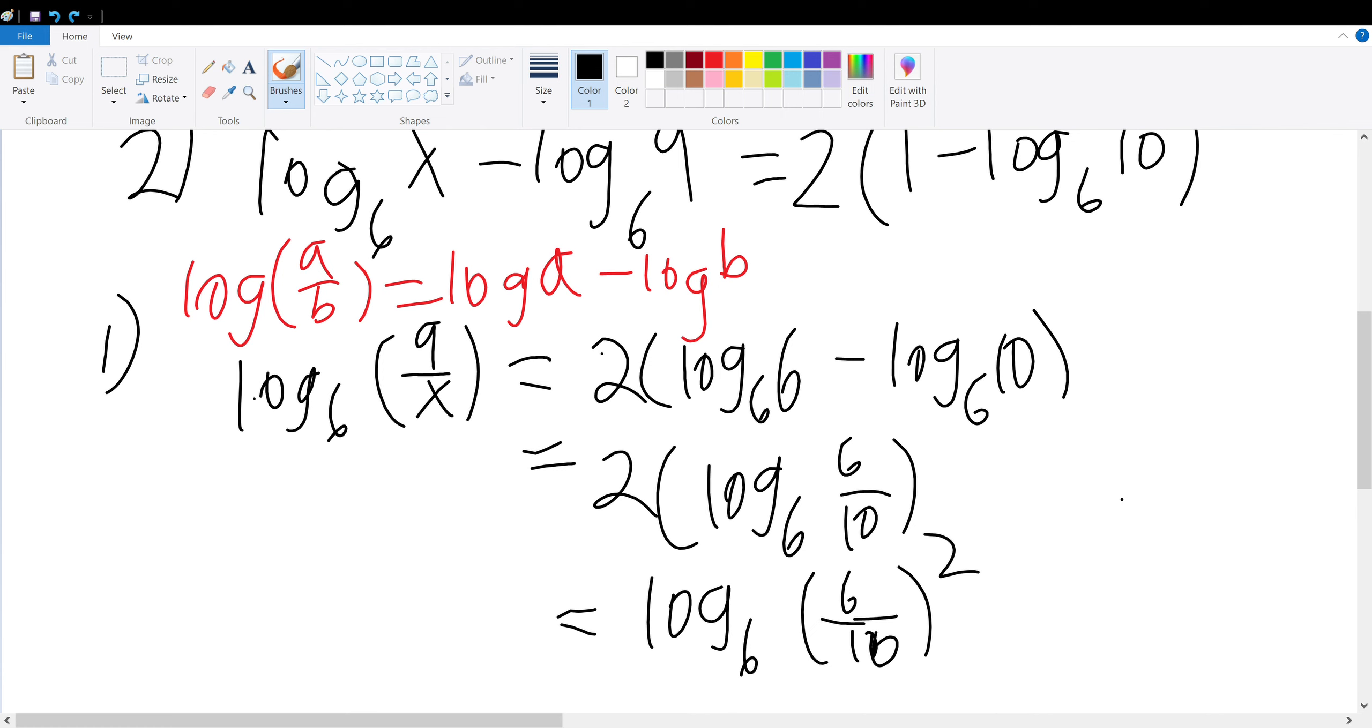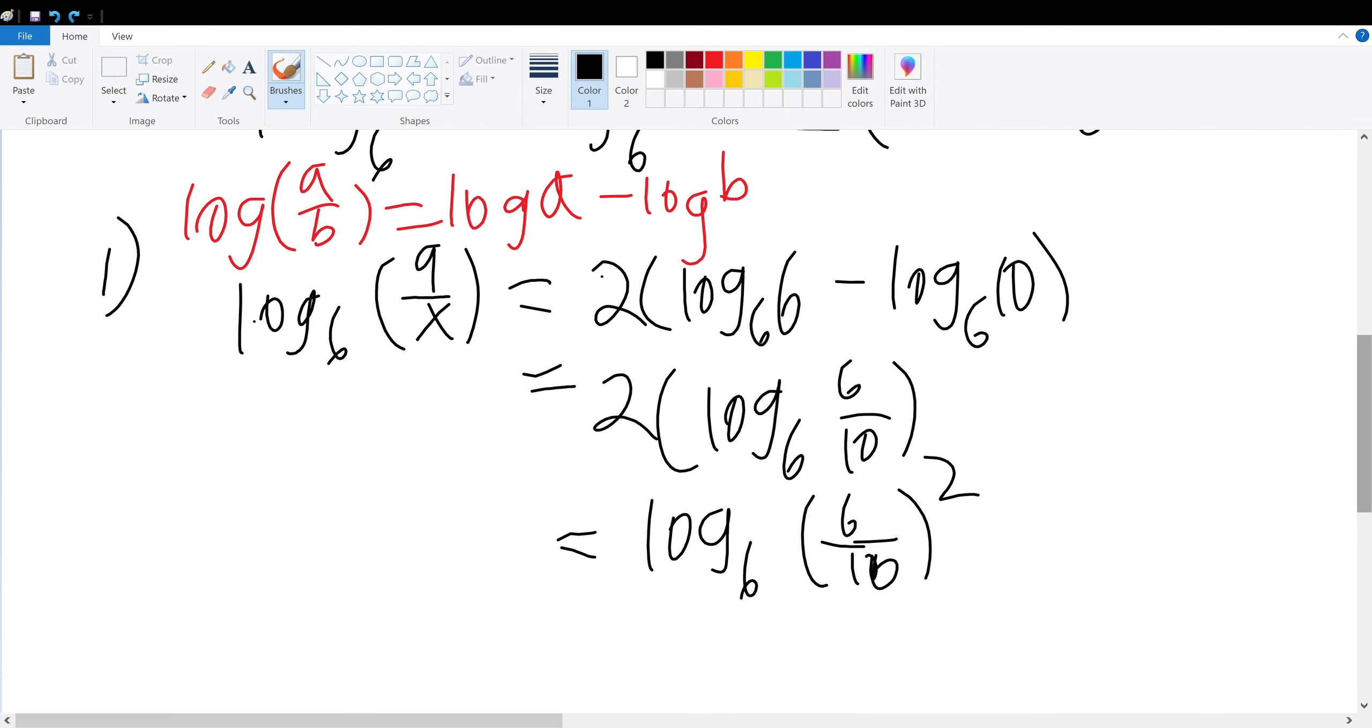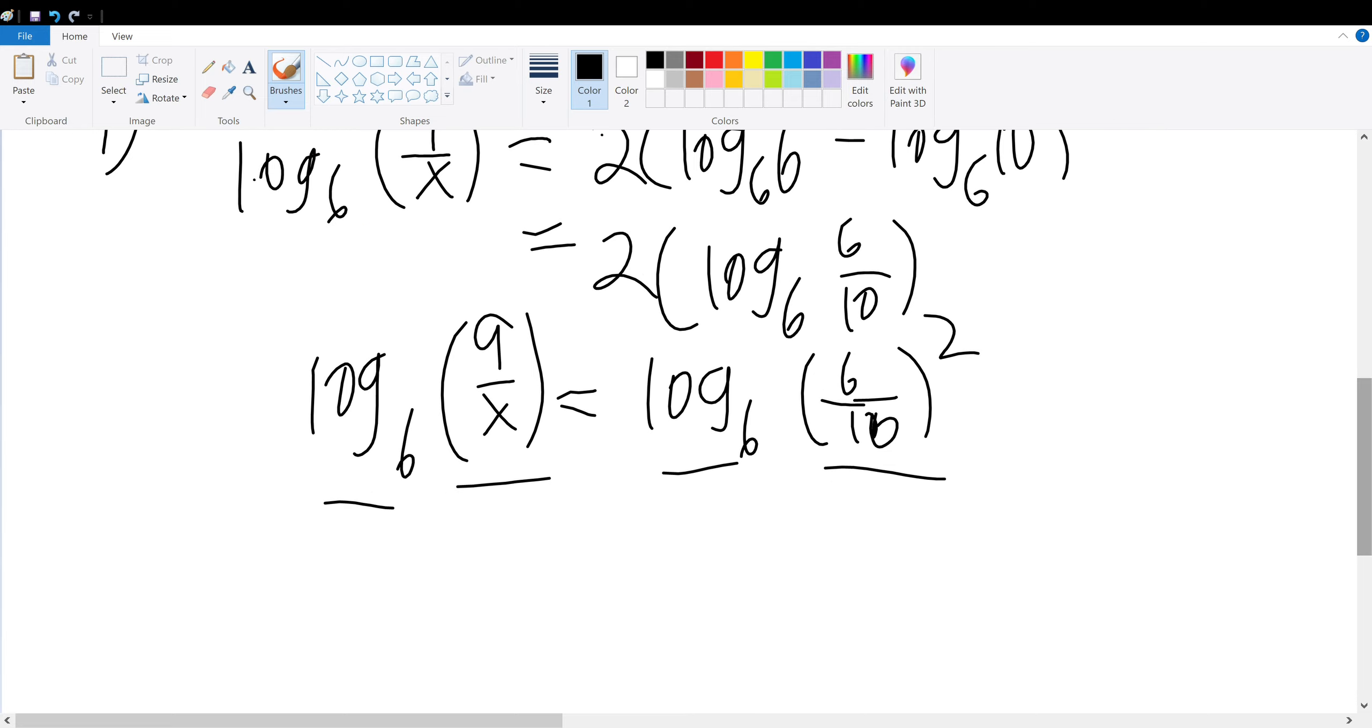So the right-hand side is just log base 6 of 9 over x. Now, since both log bases are the same, their arguments must also be the same. In this case, that would entail 9 over x being equal to 36 over 100. And if that's the case, then that means x must be equal to 100 over 36 times 9.